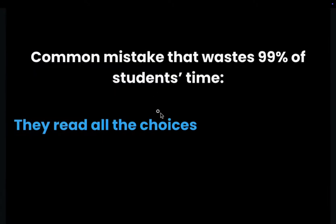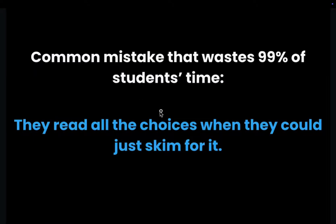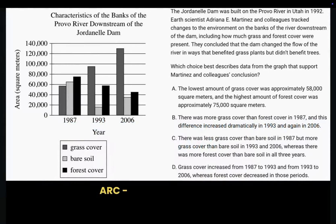One of the biggest mistakes students make is checking all the multiple choices and comparing them to the graph. What you should do if you have a prediction is just skim the choices and find the one that says the same thing as your prediction. Let me show you how you can save lots of time with the next question.